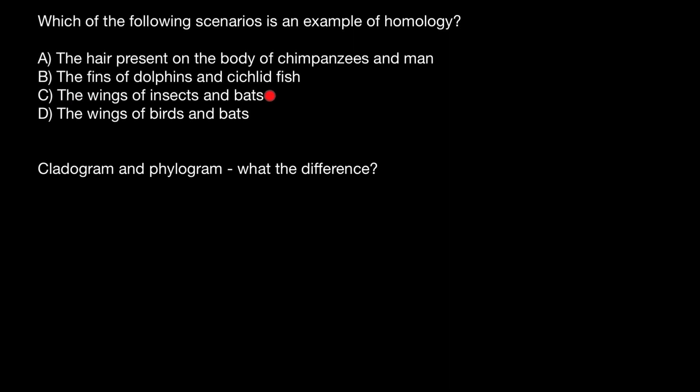Variant C, the wings of insects and bats. Also, as you see, they do not share recent common ancestors. And this is also going to be an example of homoplasty.